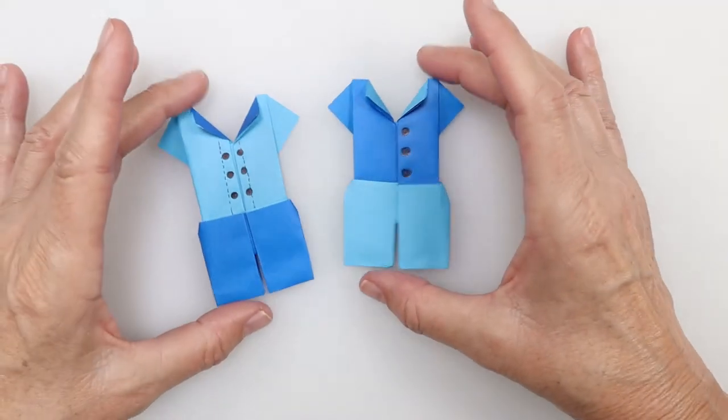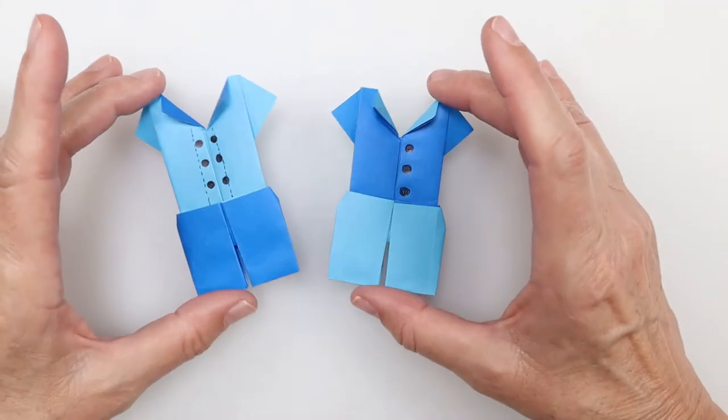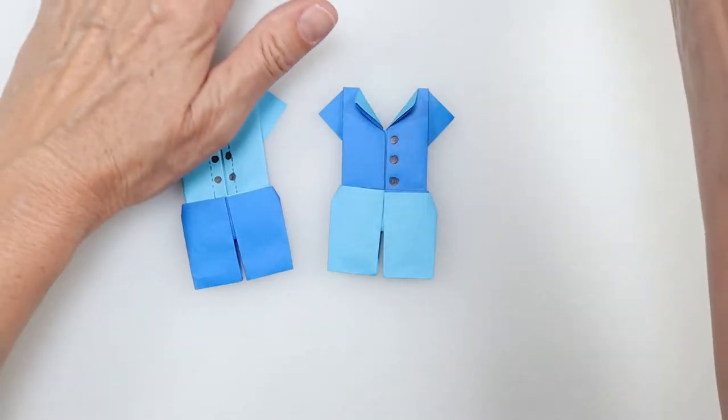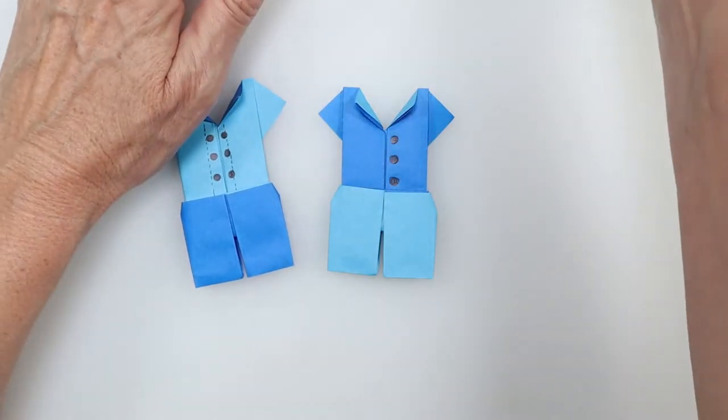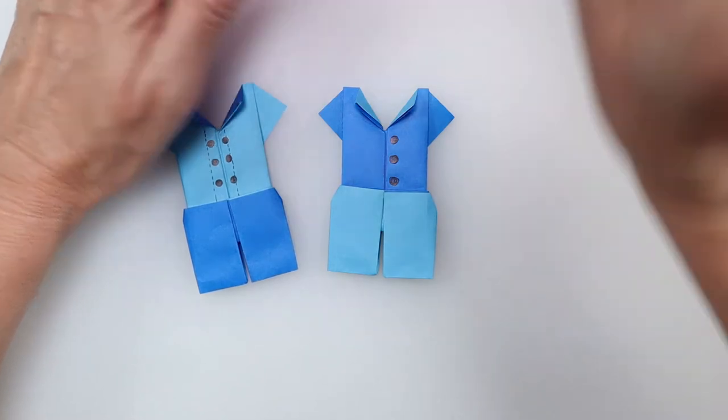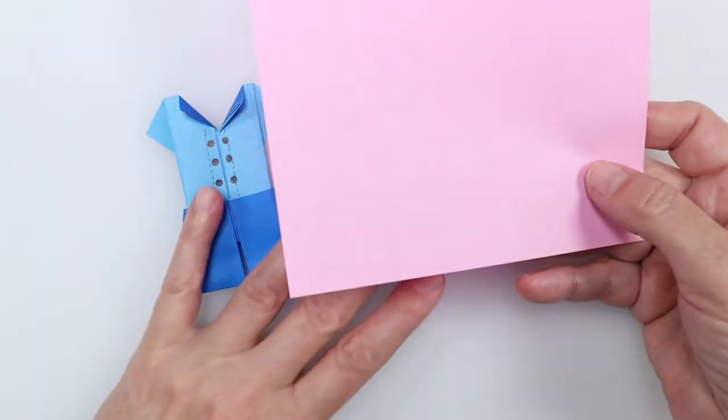Hello, today we're going to make these cute little one-piece rompers, and we're going to use just a single sheet of paper. I'm using this double-sided paper.